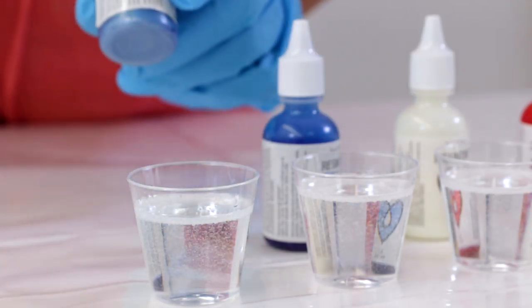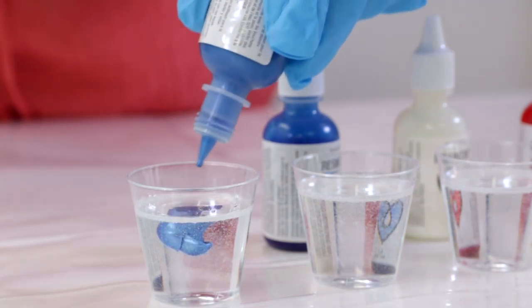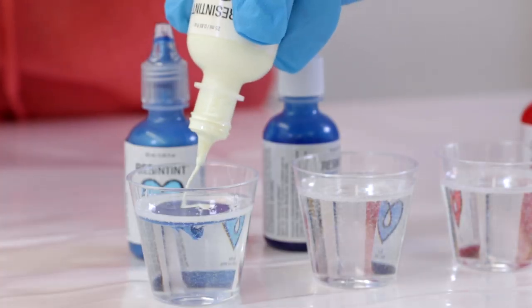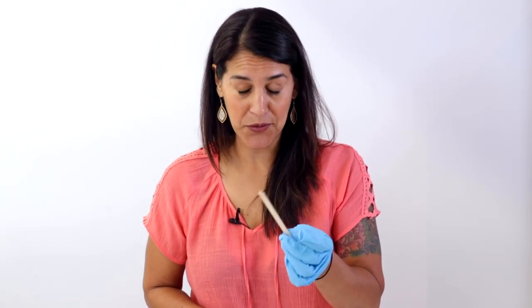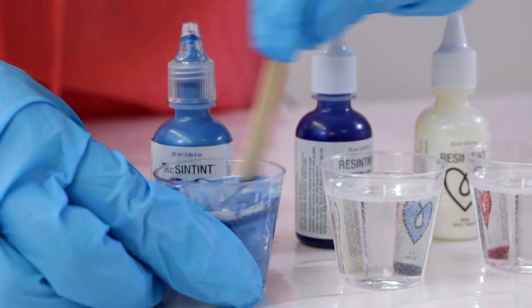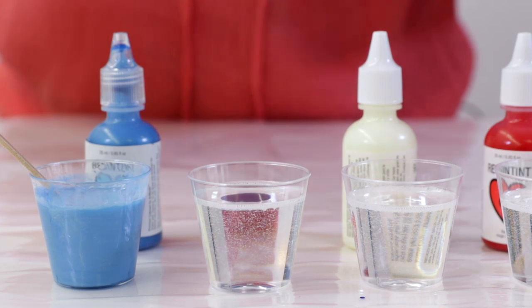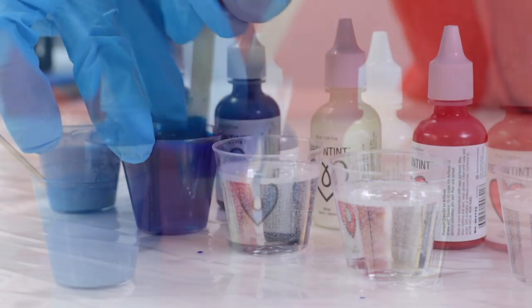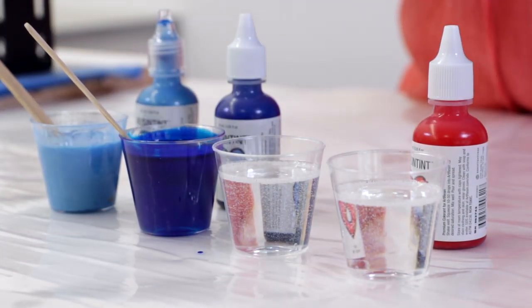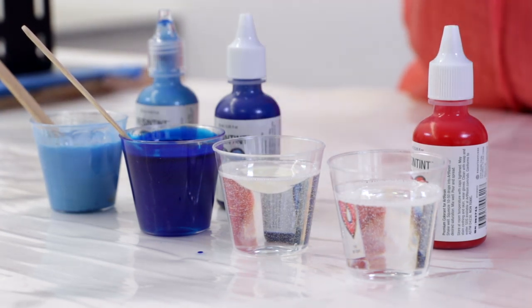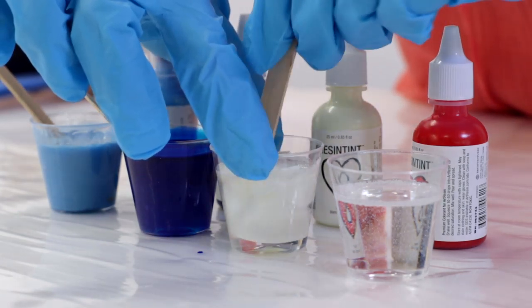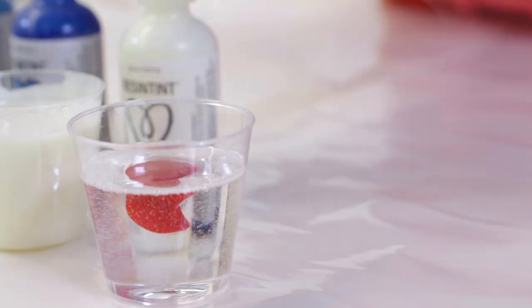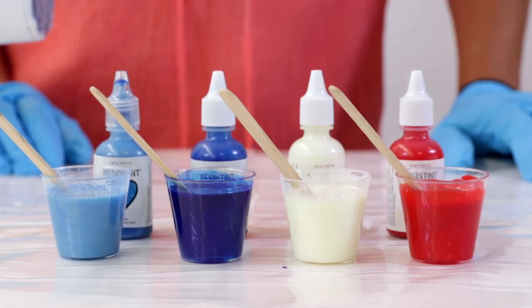Now we're ready to get started. I'm gonna start with my pearl blue and I'm gonna add a little bit of white to this because I actually wanted a sky blue. It's super handy having these popsicle sticks on hand, not only for mixing but also for applying the resin to the tumbler. We'll do the pearl blue, then our dark blue, next is our white, and then finally is our red. I love this red—it's so pretty. We've got our red, white, and blue color palette, and now we're ready to resin our tumbler.